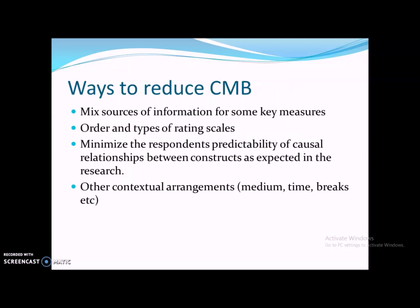What are the ways through which we can reduce common method bias? The first is to mix sources of information for key measures. If you utilize different sources — for example, collecting data for some variables using primary sources by asking respondents, and for others using secondary sources — it will be a mixed source of data collection and will reduce common method bias issues. The second is the order and types of rating scales utilized in your research questionnaire.